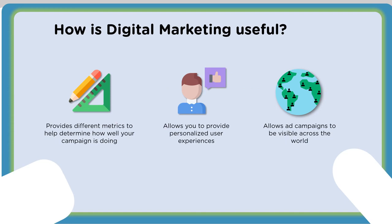How is digital marketing useful? It provides different metrics — because it's all digital, anytime you send out an email or post something on Facebook, you get data back. You can take that data to determine how well that post or email performed, and if it didn't perform up to expectation, you can make changes to improve performance — that's called optimization. The great thing about digital marketing is that we get data, in some cases instantaneously, to optimize campaigns.